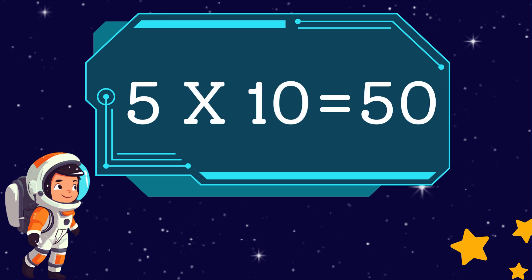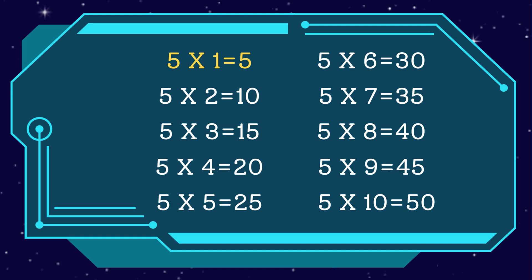Five tens are fifty. Five ones are five. Five twos are ten. Five threes are fifteen. Five fours are twenty. Five fives are twenty-five. Five sixes are thirty. Five sevens are thirty-five. Five eights are forty.